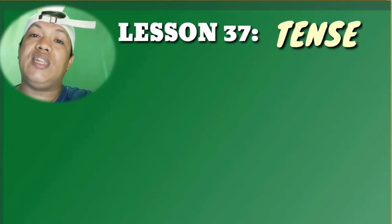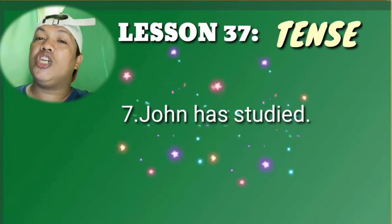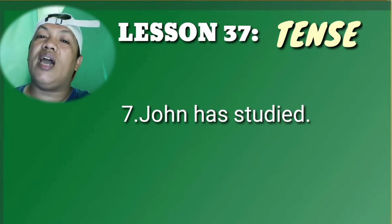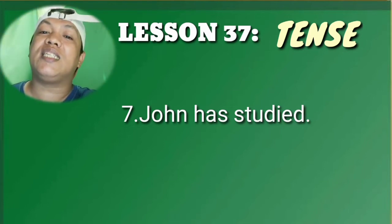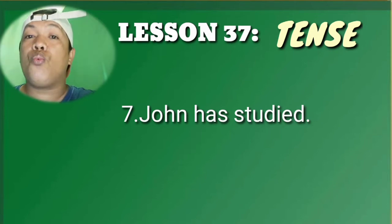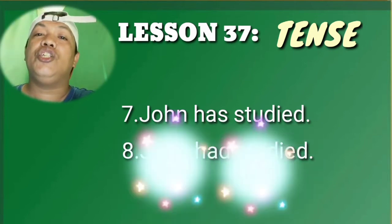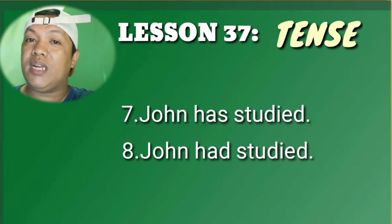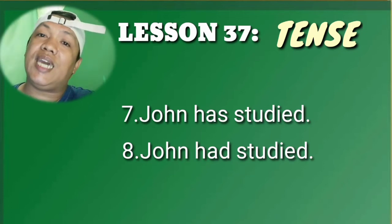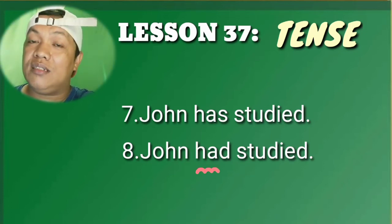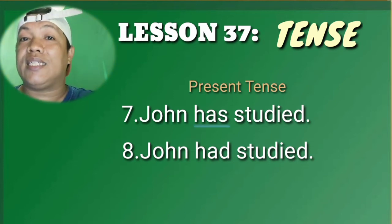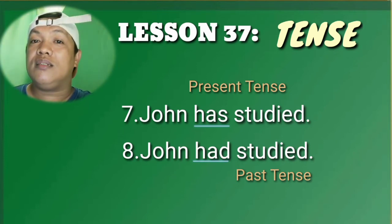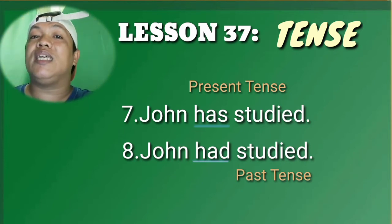Let's move to sentences seven and eight. Sentence seven: 'John has studied.' The underlined word is 'has.' Sentence eight: 'John had studied.' The underlined word is 'had.' Comparing sentences seven and eight: 'has' is present tense, and 'had' is the past tense of 'has.' Sentence seven shows present tense with 'has,' and sentence eight shows past tense with 'had.'